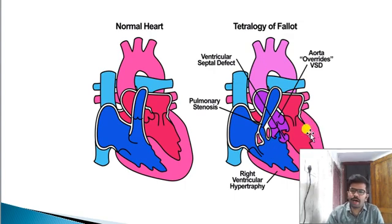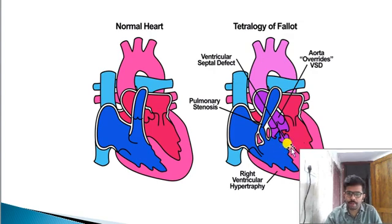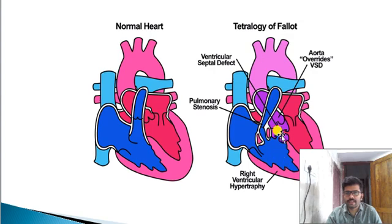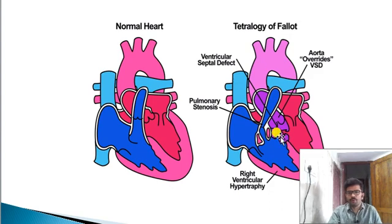Pulmonary artery hypertrophy on the left side of the heart — red color is oxygenated blood. The two are mixed in. This is pulmonary stenosis. This is the right ventricle. The length of the artery is the pulmonary artery — this is pulmonary stenosis.